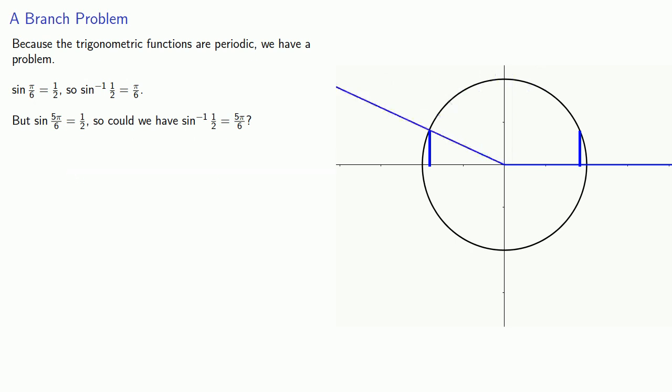Well, no, we really don't want that to happen. Since we don't want the inverse sine of a to have different values — because then it wouldn't be a function — we have to restrict the range.